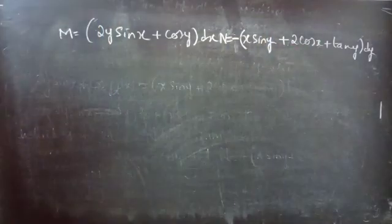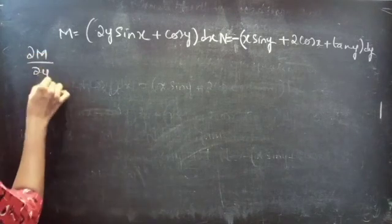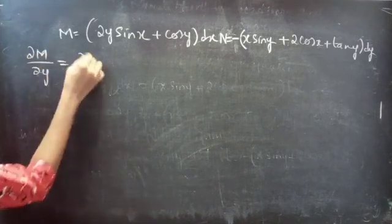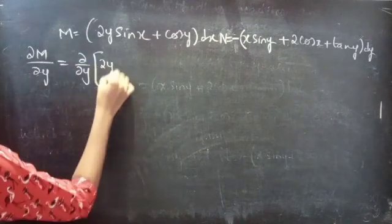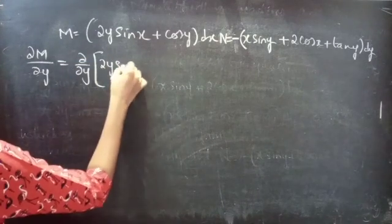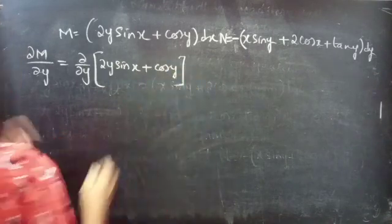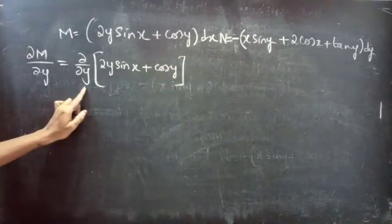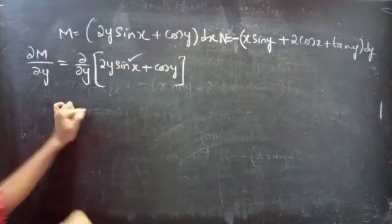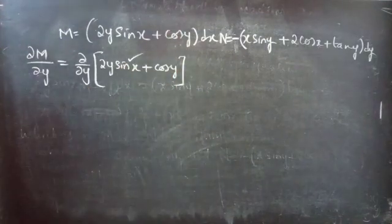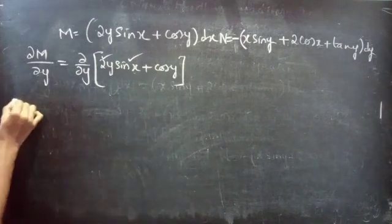Let's find the partial derivative of M with respect to y. ∂M/∂y of (2y sin x + cos y): since we are doing partial differentiation with respect to y, we treat x and any function containing x as constant. So 2 and sin x will be constants.